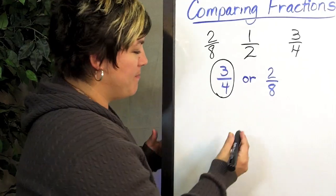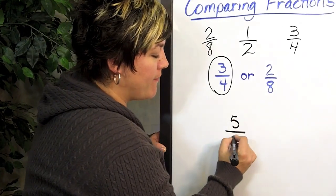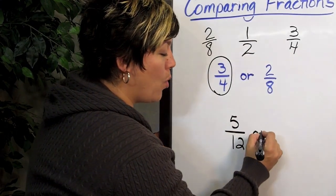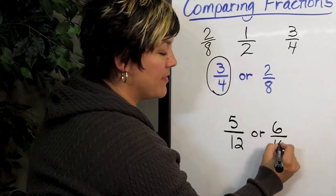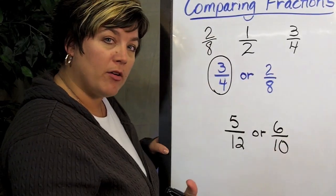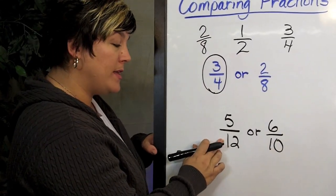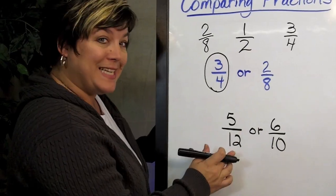Let me show you that one more time. Let's say we wanted to compare 5 twelfths or 6 tenths to find out which one was greater. So right away we'll say, well, if I have 12 in my denominator, half of 12 is 6.